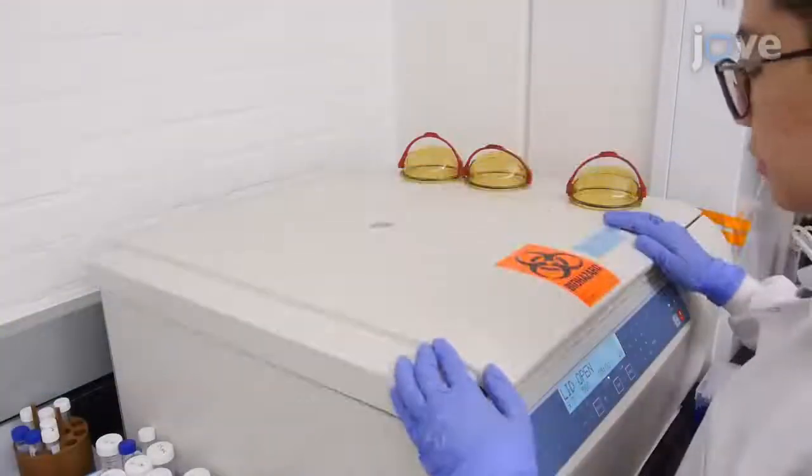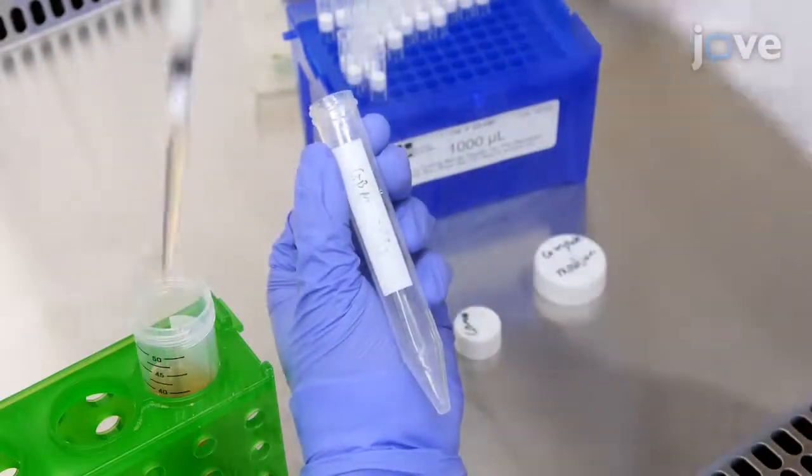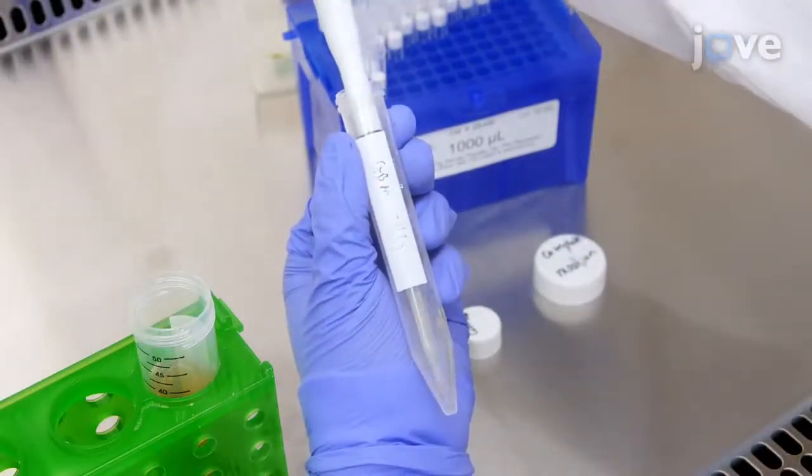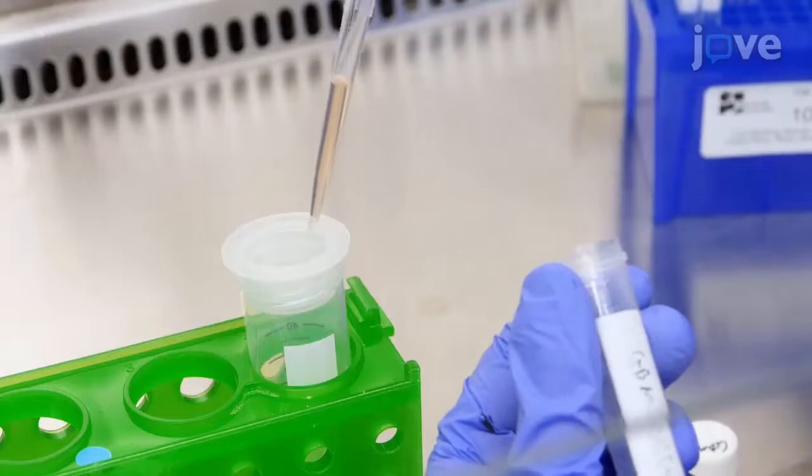Centrifuge the cells again and re-suspend the pellet in 1 milliliter of fresh complete medium before straining the cells through a 70-micrometer filter.